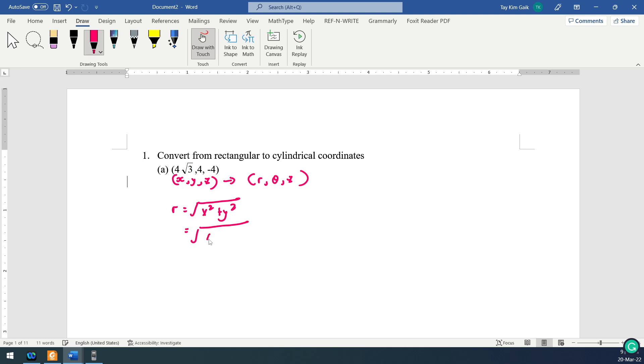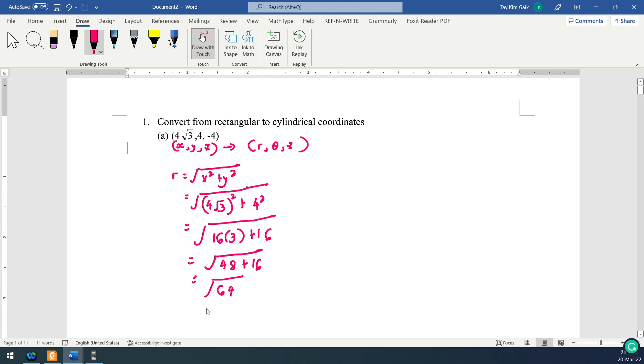So r is square root of x squared plus y squared. So you have 4√3 squared, then y squared, 4 squared. So 4√3 squared is 16, so 48 plus 16 is 64. So it's 8. So the r is 8.